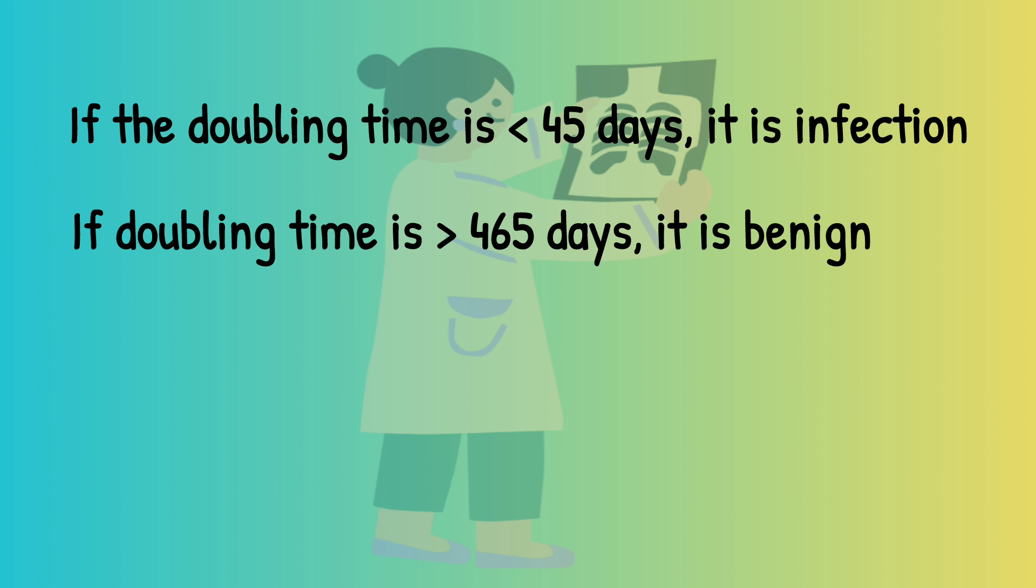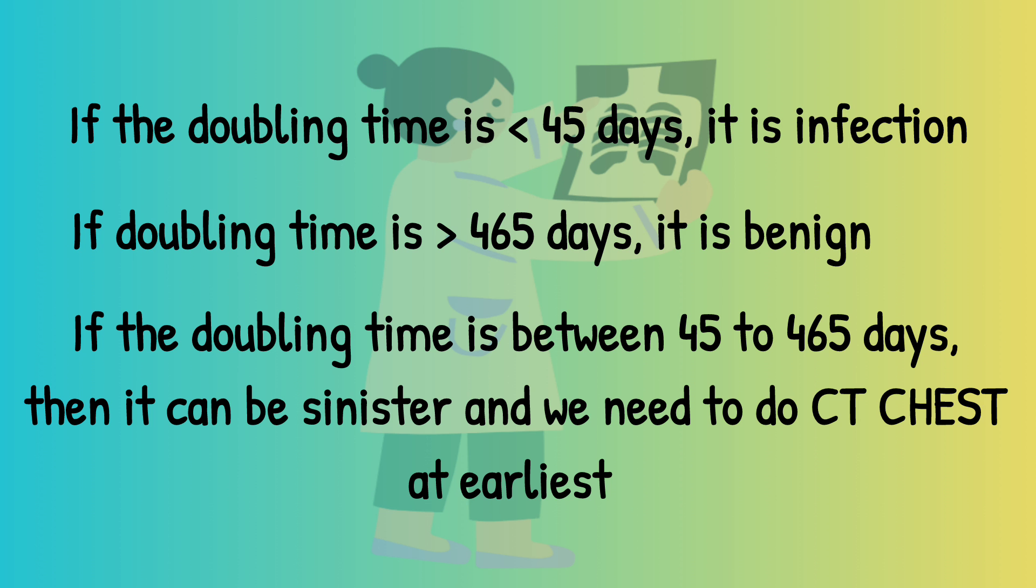If the doubling time is between 45 to 465 days, then it can be sinister and we need to do CT chest at earliest. I hope this has clarified your concept regarding coin-shaped lesion on chest x-ray.